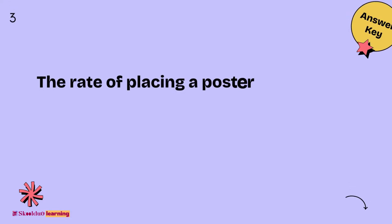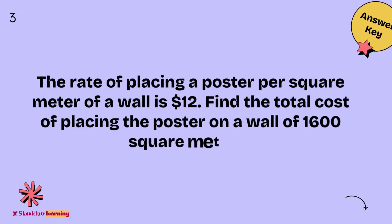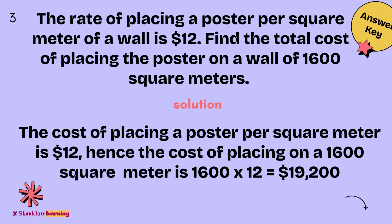Number 3. The rate of placing a poster per square meter of a wall is $12. Find the total cost of placing the poster on a wall of 1,600 square meters. Solution: The cost of placing a poster per square meter is $1,600 multiplied by 12, which equals $19,200.